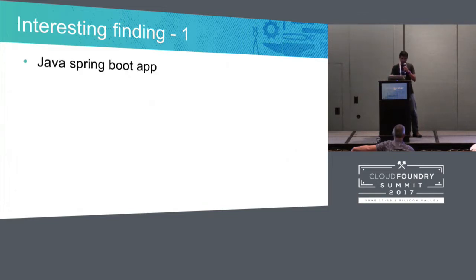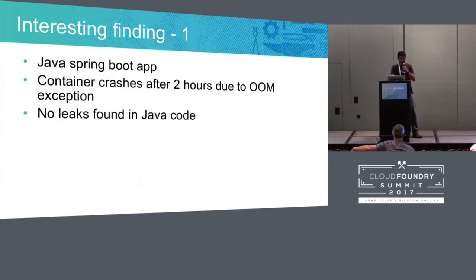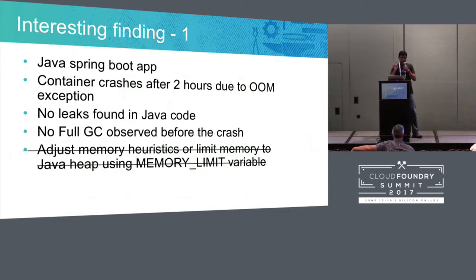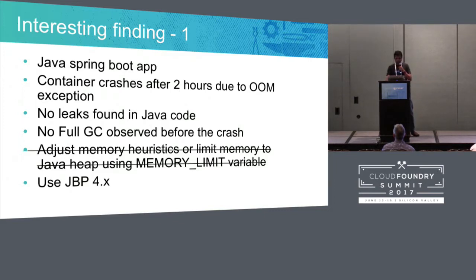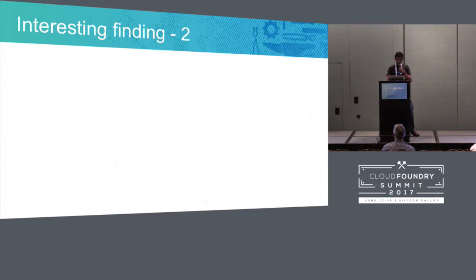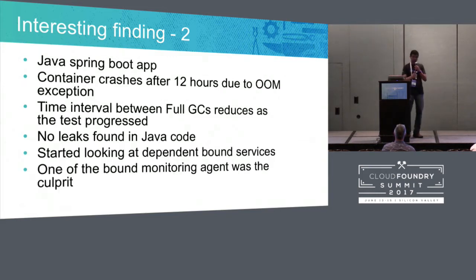One industry finding: there was a Spring Boot app constantly crashing every two hours. We couldn't find any leaks in our Java code and observed no full GC before the crash. The problem was it was using far more native memory than allocated. We previously used the memory limit variable, but now we use Java Build Pack 4.x, which provides different memory segments for proper sizing. Additionally, the monitoring agent itself was causing a memory leak, so we had to unbind it and retest.